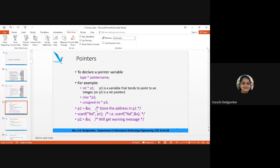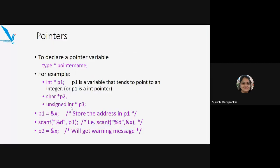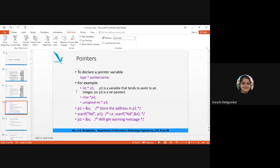Then how are the pointers different? Why are different data types required? The data type tells the type of variable to which the pointer is pointing. An int pointer means P1 can point to integers, P2 can point to characters (one byte), and P3 can point to unsigned int variables. The data type is relevant to how you treat the pointer.